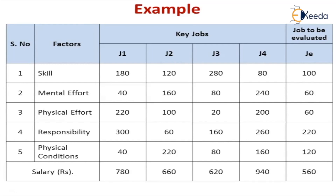For a responsible job, I have given 300, 160, and 260 rupees for the particular key jobs' responsibility, and I have decided to give 220 rupees as a minimum for responsibility in the new job. Similarly for skills I give 100, and for mental effort 60. Finally, after calculating individually for skill, mental effort, physical effort, responsibility, and physical conditions, I have decided to give 560 rupees for the new job. This is the factor comparison method.